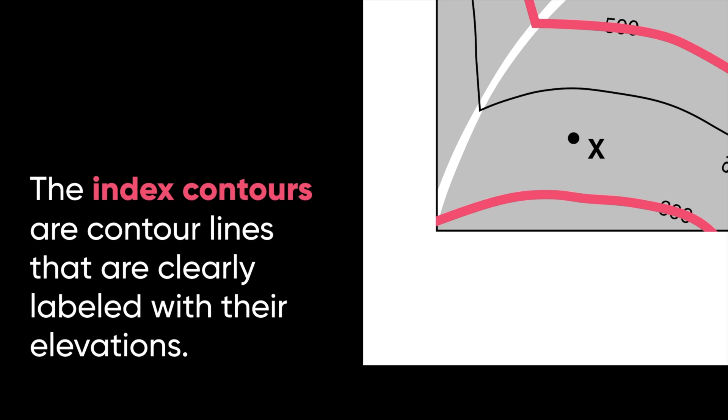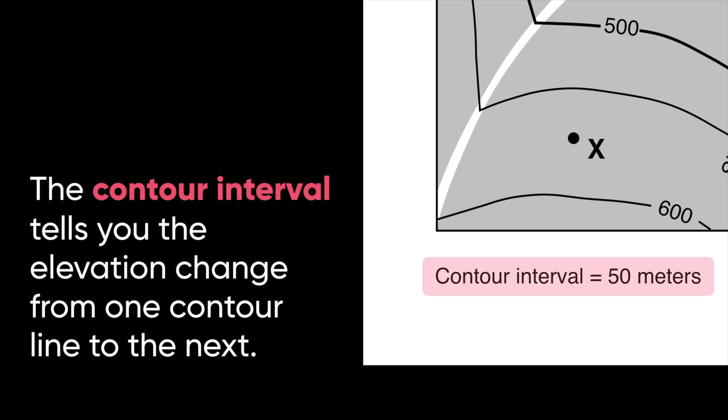Now, unfortunately, on most topographic maps, there's just not enough room to label the elevation of every single line. And this is why we use index contours, maybe every second line or every fifth line or every 10th line, depending on the map. Either way, oftentimes you will be given what's called the contour interval. And the interval tells you explicitly the amount of elevation increasing or decreasing with each line. Now, this map is clearly labeled with an interval of 50 meters. And what that means is that as you go from one contour line to the next, there's going to be a change in elevation of 50 meters. So that contour interval tells you the elevation change from one line to the next.